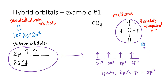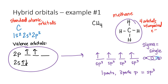We call these bonds sigma bonds. Whenever you have a single bond, we call it a sigma bond. The sigma bond is due to electron clouds overlapping along what we call the internuclear axis. So imagine two sp3 orbitals with a dotted line between the nuclei — the electrons are overlapping in between the two nuclei.